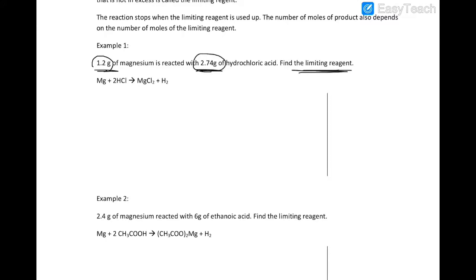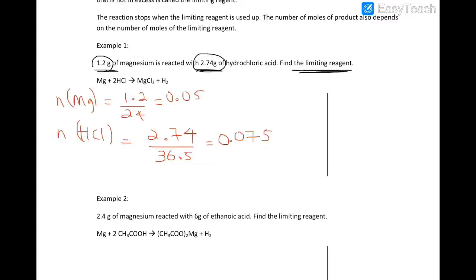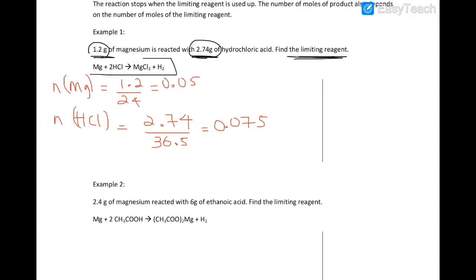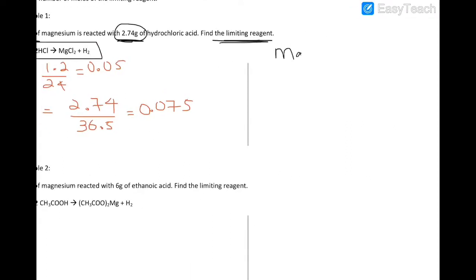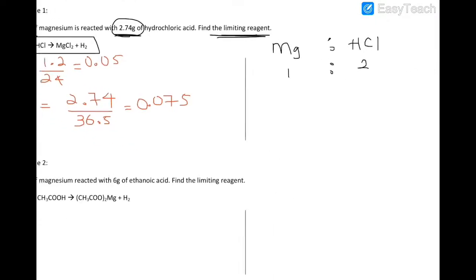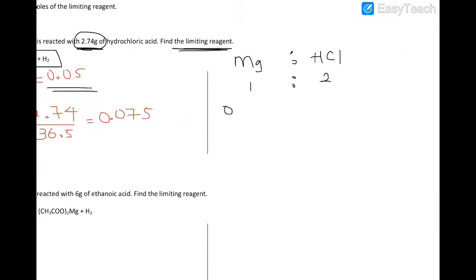In this example, we have the mass of magnesium and the mass of hydrochloric acid. We find the number of moles of each. From the equation, the mole ratio of magnesium to HCl is 1:2. We write the number of moles of magnesium — 0.05 — and the number of moles of HCl — 0.075 — then divide each by their respective mole ratio: divide by 1 and divide by 2.